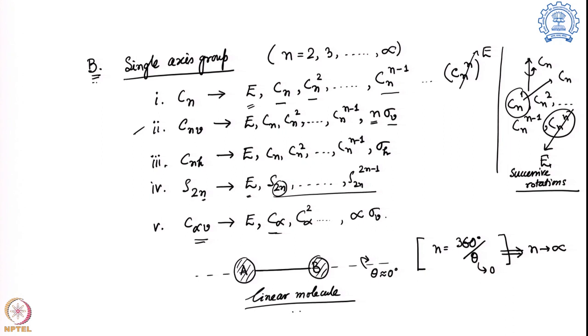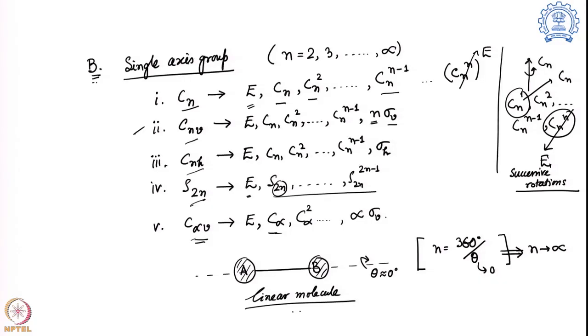To recap, all those point groups — Cn, Cnv, Cnh, S2n, and C∞v — are called single axis rotation groups because there is only one axis or line about which all rotational operations occur; there is no other axis of rotation in the molecule. But there is a possibility that a molecule belongs to a point group with multiple axes of rotation, and those are the dihedral groups.